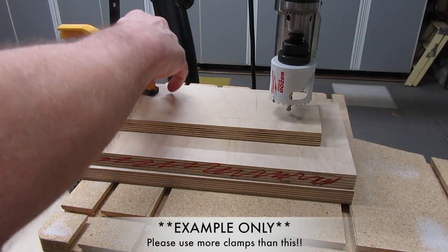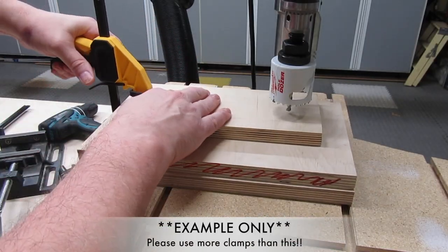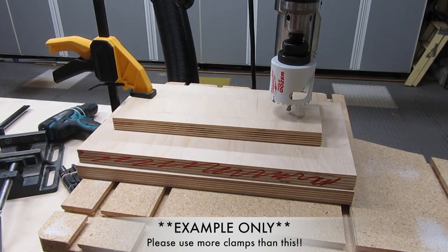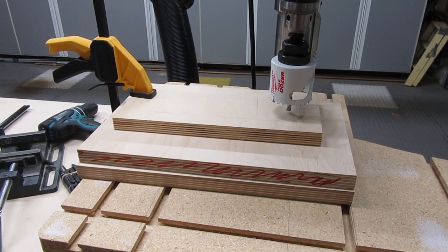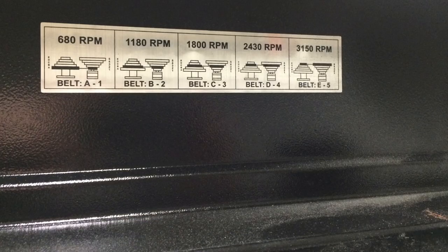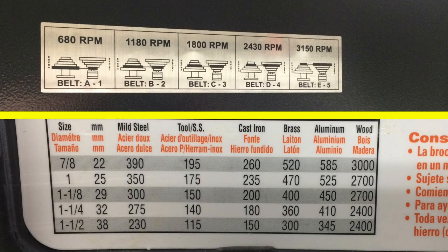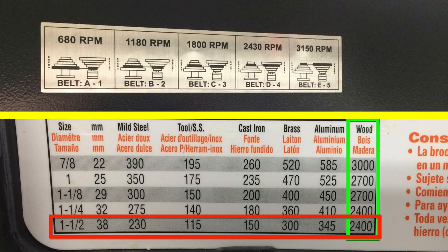If none of these options work for you, then clamp or screw the stock to a backing board. Actually, you may need more than one backing board, depending on the height of the pilot bit. Lastly, make sure your drill press is set to the recommended speed, or lower, for the saw you're using.